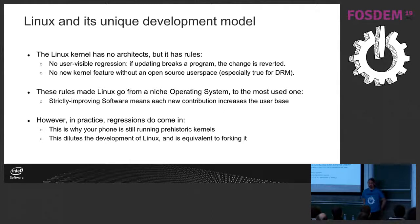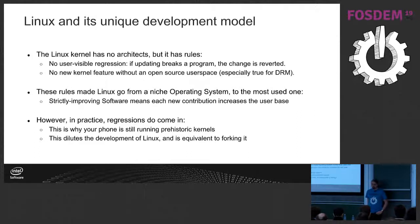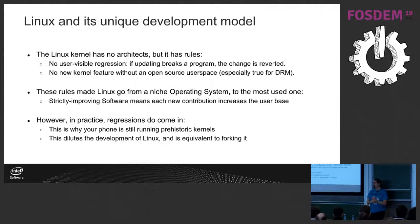If you make a user-visible regression, the code has to be reverted. Especially for the DRM subsystem, if you make a kernel feature without user space that matches it to actually use the feature, it's not going to be accepted. Linux went from being a niche operating system — it started with a student announcing something on a mailing list — and contributions came in without regressing the feature set, which increased the scope and user base. That's why it's been so successful.